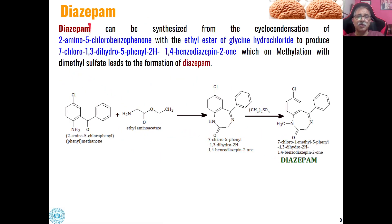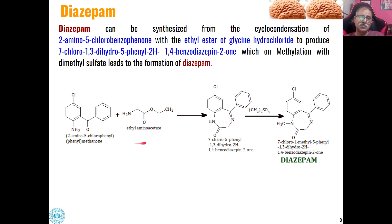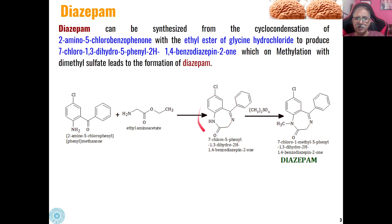The first and most common among these anti-psychotic drugs is Diazepam. Diazepam can be synthesized most commonly from cyclocondensation of this benzophenone derivative, 2-amino-5-chlorobenzophenone. When this is condensed with ethyl amino acetate, the amino part condenses with the keto part and we get this type of 1,4-benzodiazepine-2-one derivative.